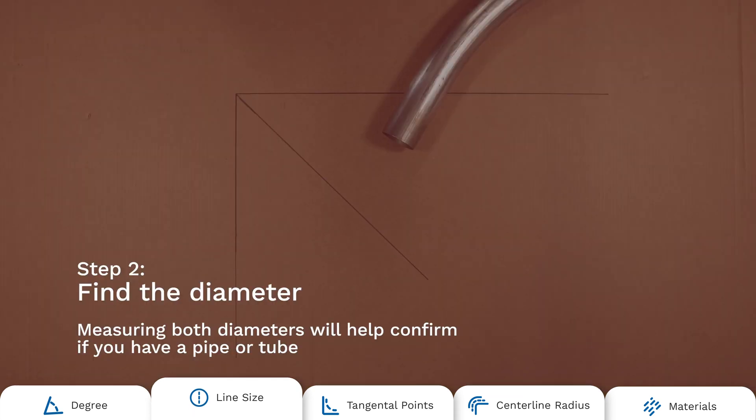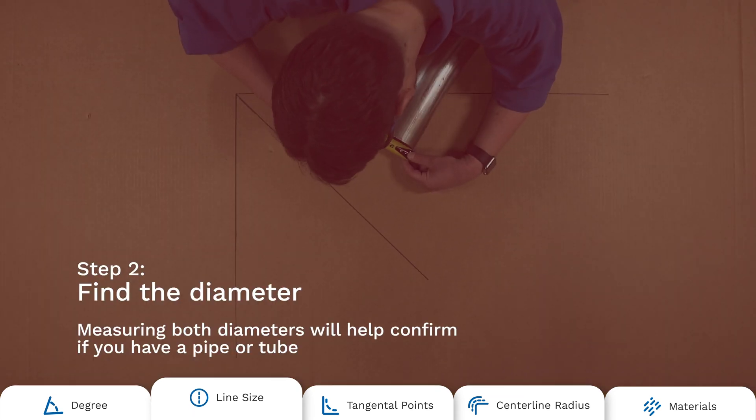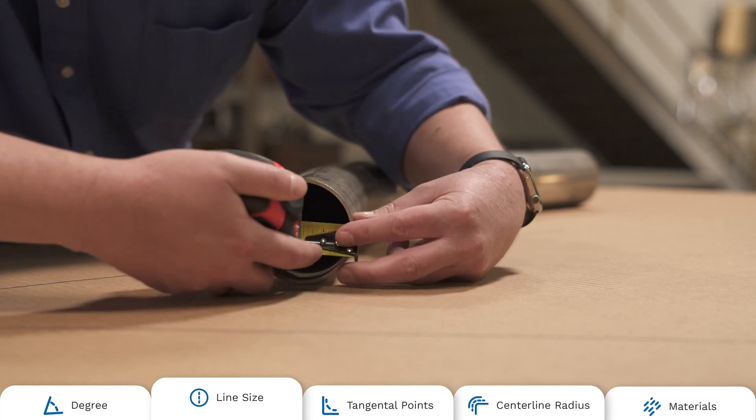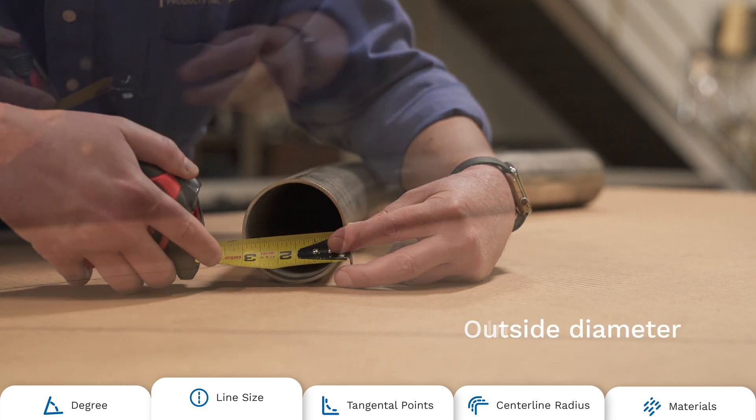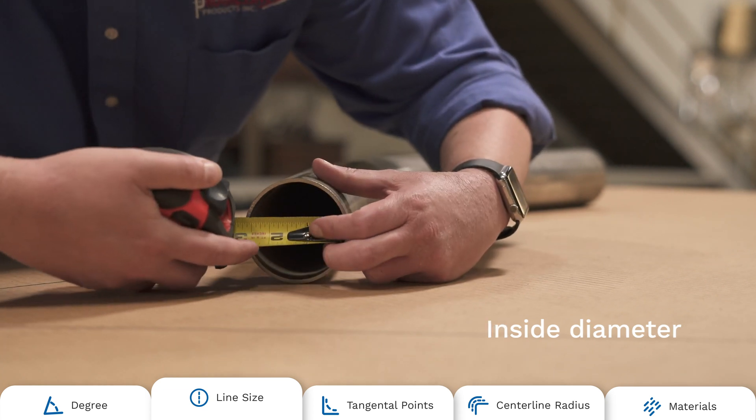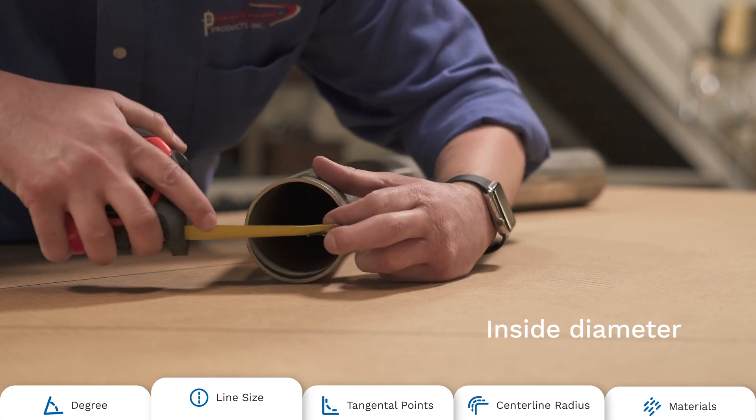Then you need to find the diameter. Using your tape measure, measure the outer diameter of the elbow, followed by the inner diameter. Measuring both diameters will help confirm if you have pipe or tube. Tubing measurements are typically taken by the outside diameter, while piping measurements are taken by the inside diameter.